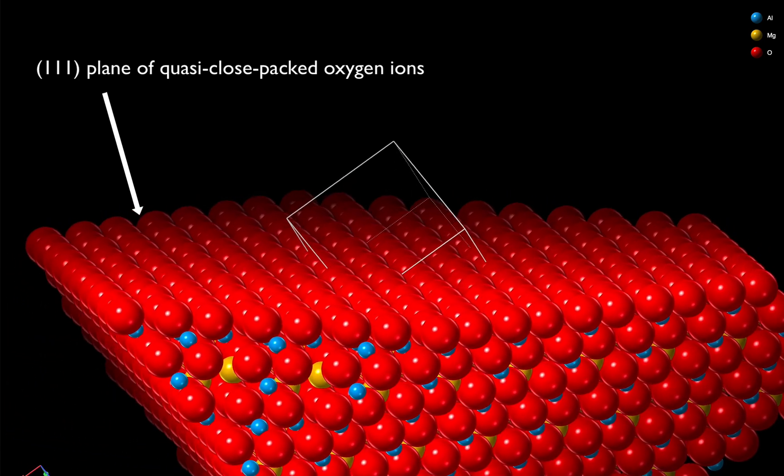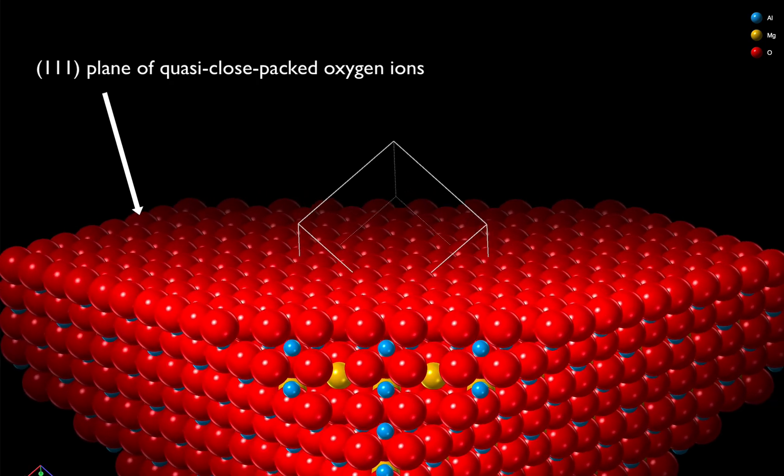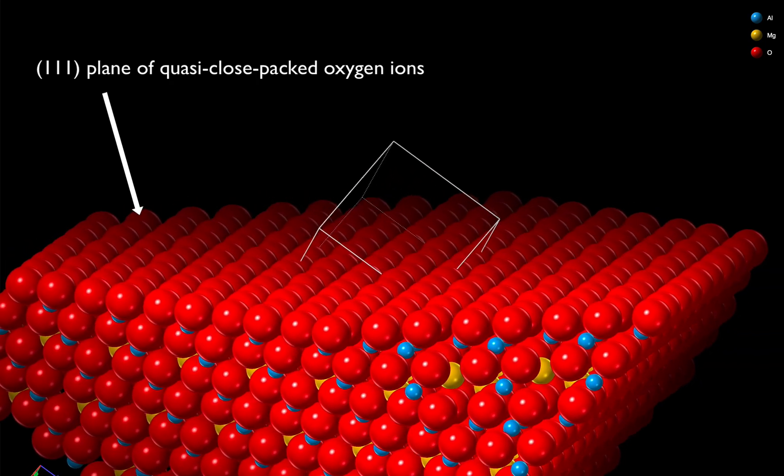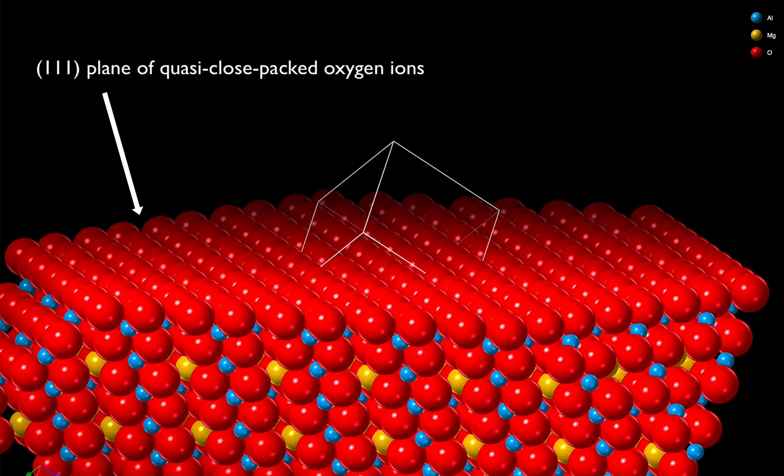Here then is our ideal 111 plane in the spinel structure, showing quasi-close-packed oxygen ions.